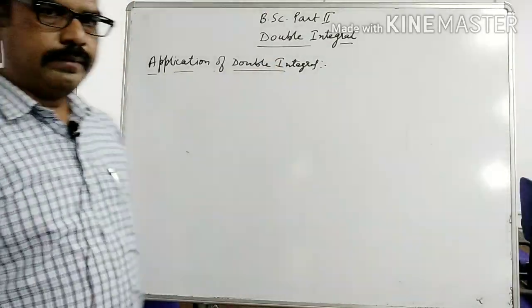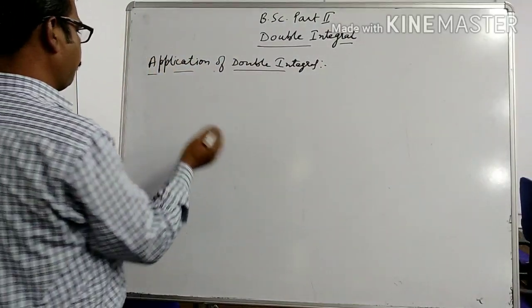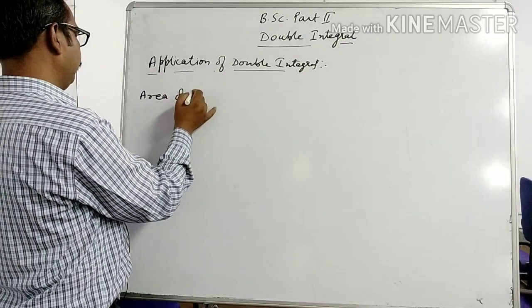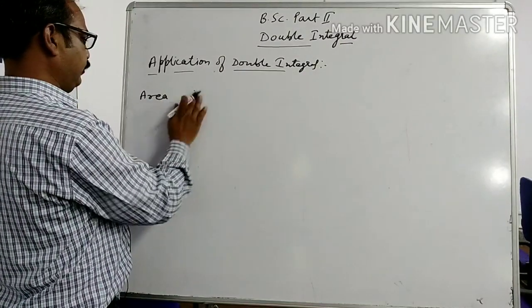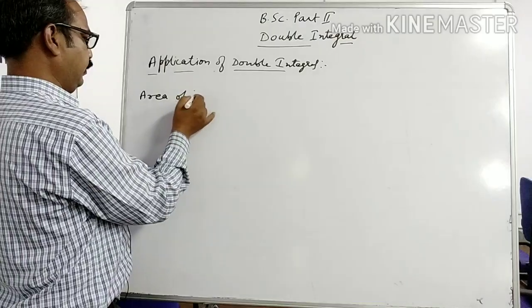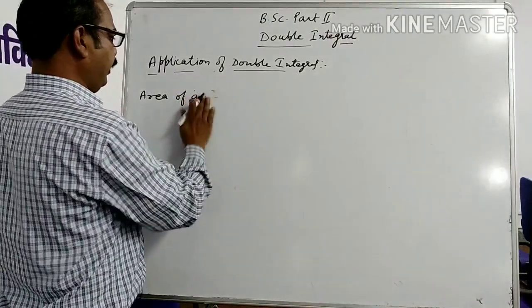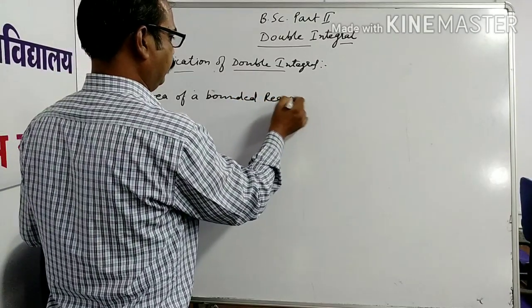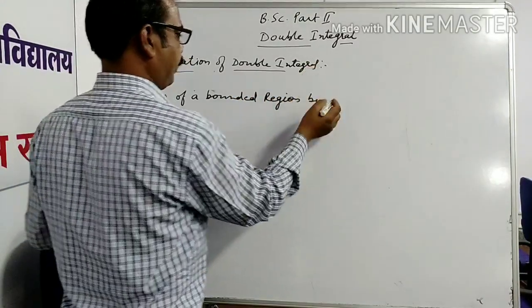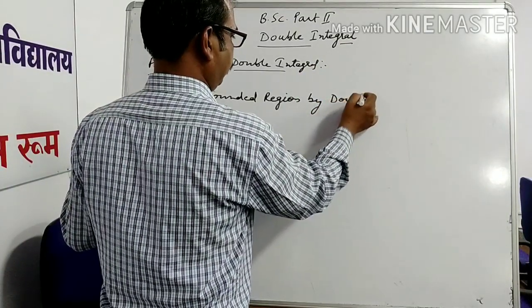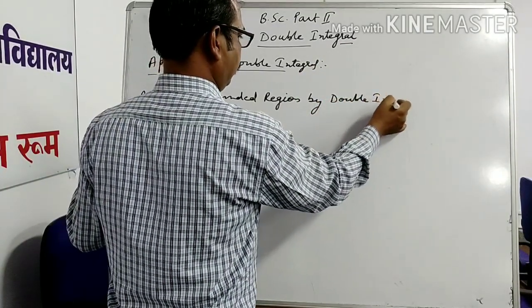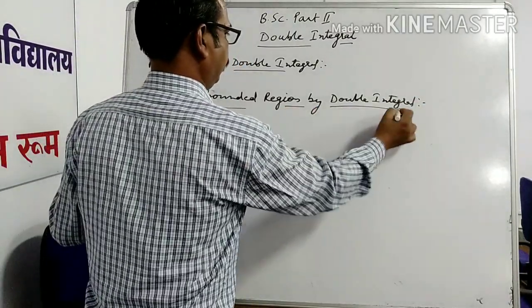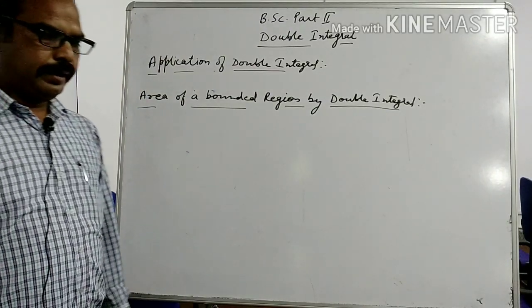The first application of double integral is to find the area of a bounded region by double integral — area of a bounded region by double integral.